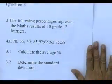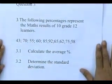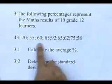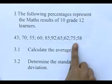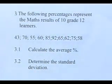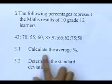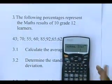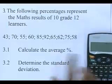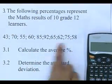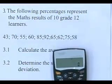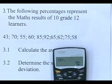The question says: the following percentages represent the maths results of 10 Grade 12 learners. We have the percentages: 43, 70, and so on. The first question says you must calculate the average percentage. If I take the average, everybody knows you're only going to take the 10 values, add them together, and divide by 10.